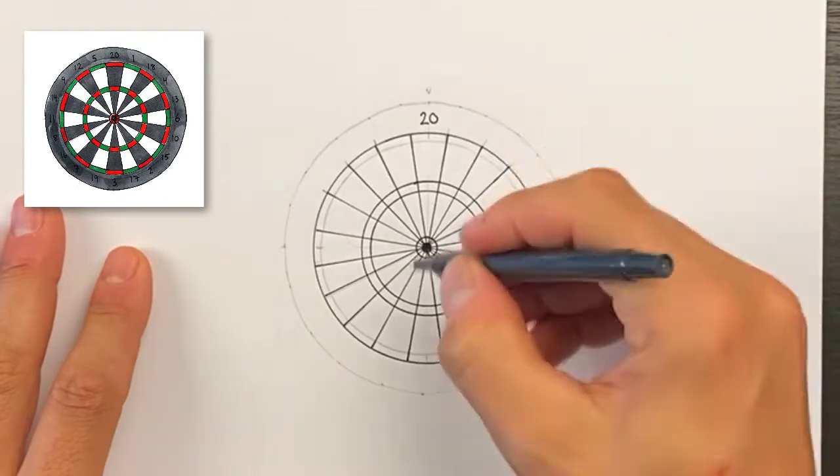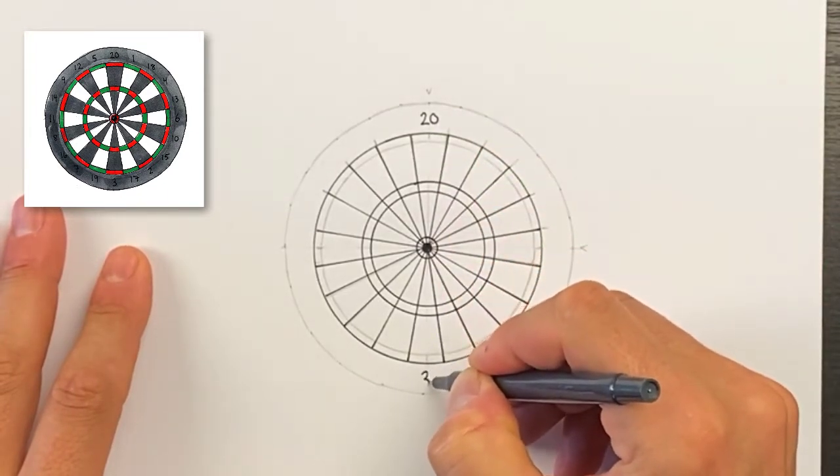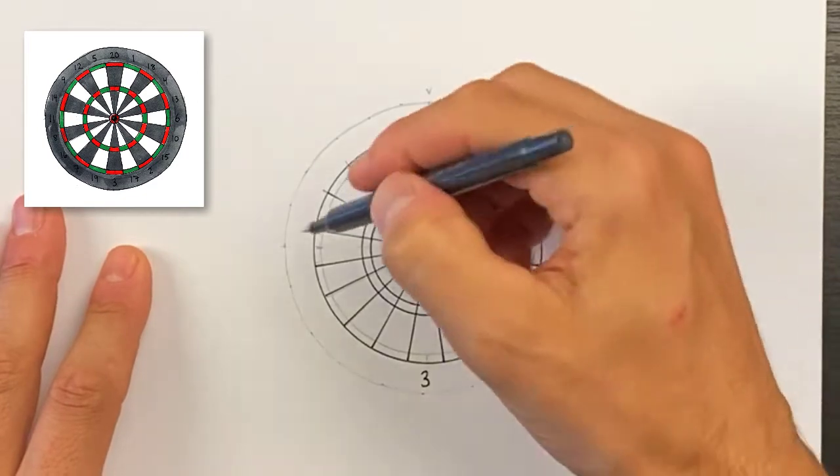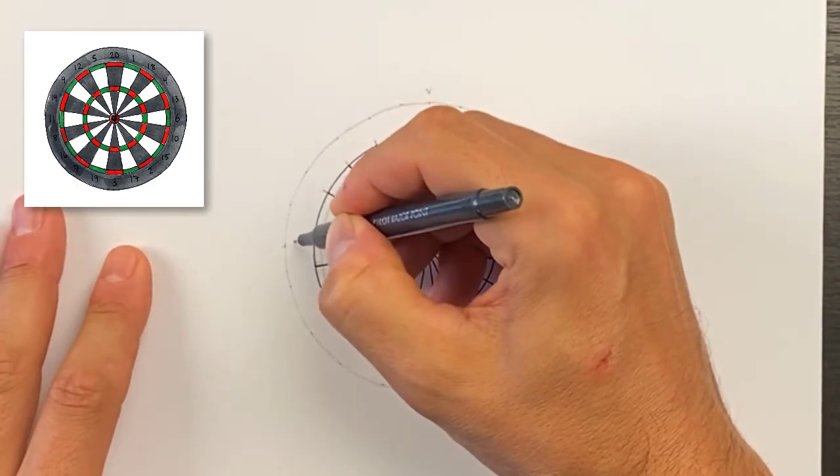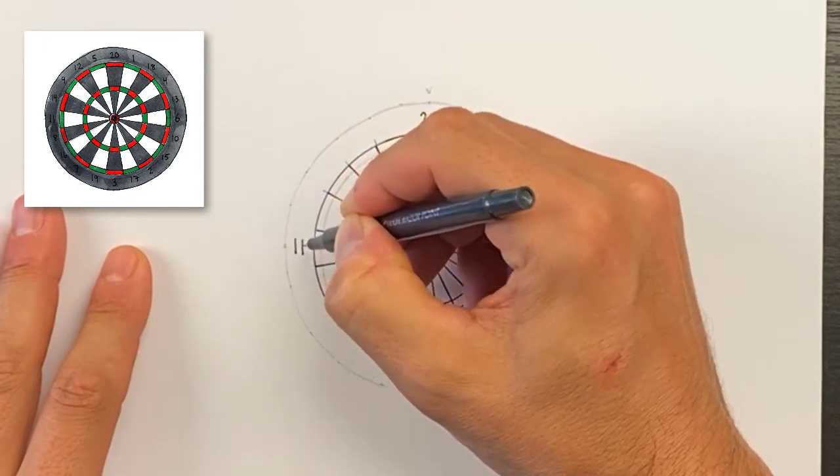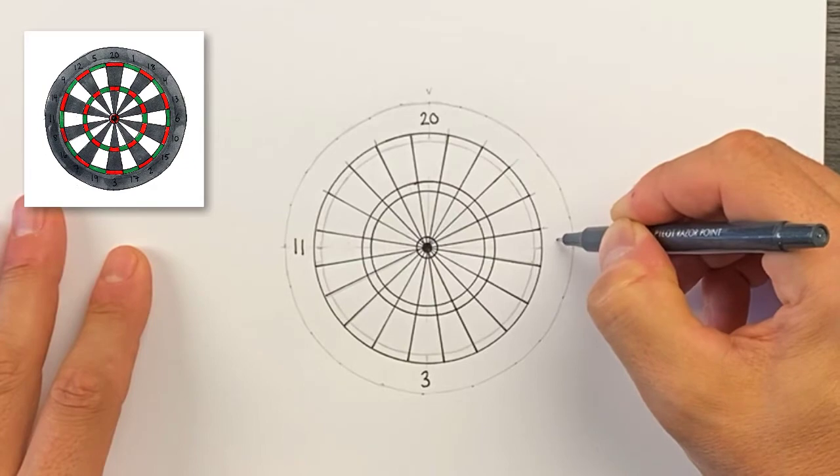We'll go all the way down to the opposite side and put 3 down at the bottom. We'll go over here on the left and do the number 11, and we'll go all the way over here to the right and put number 6.